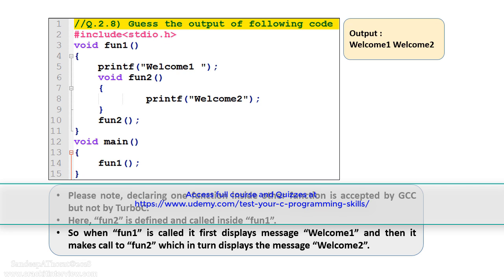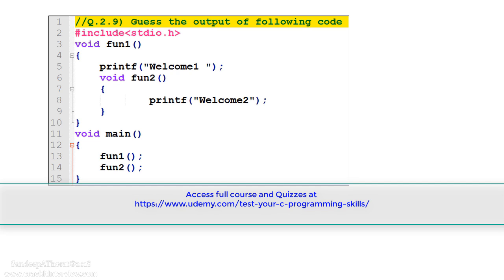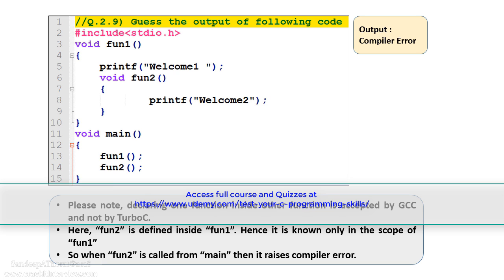Let's move to the next example. Please see this code carefully and guess the output. This code is similar to the previous example with one difference: the call to function2 is on line number 14, which is now in the main function rather than inside function1. So what will be the output? The correct answer is: this program gives a compiler error. As discussed, declaring one function inside another is acceptable to GCC but not to Turbo C. Here function2 is defined inside function1, so it is known only within the scope of function1. When the call to function2 is made from the main function, it raises a compiler error.